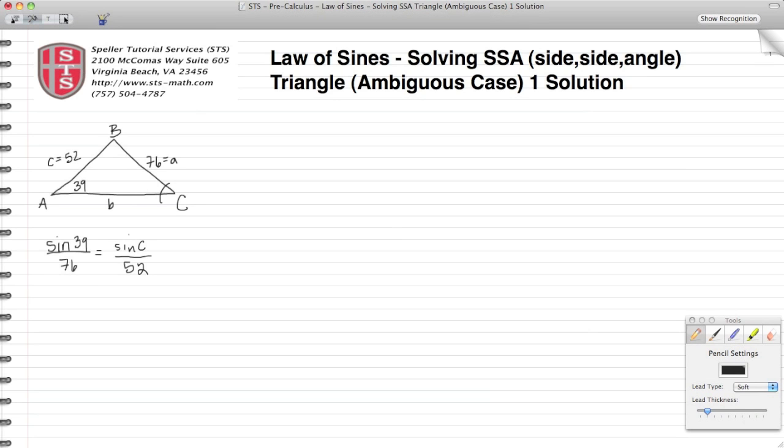Welcome back to Speller Tutorial Services. Today we're talking about the Law of Sines and we're looking at an ambiguous case because the triangle just gives us a side, a side, and an angle.